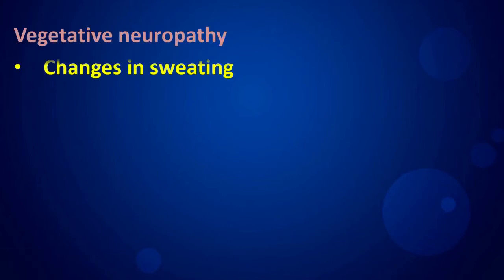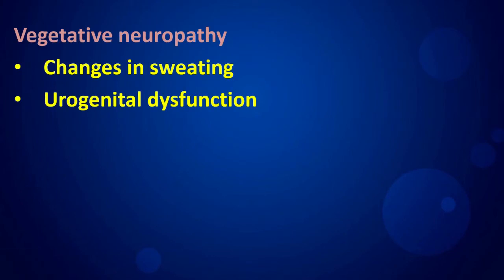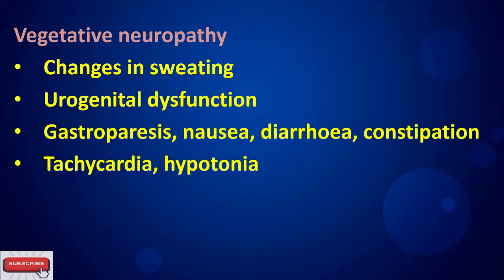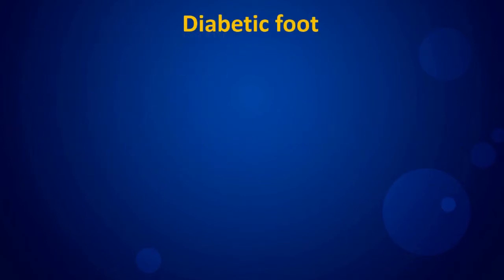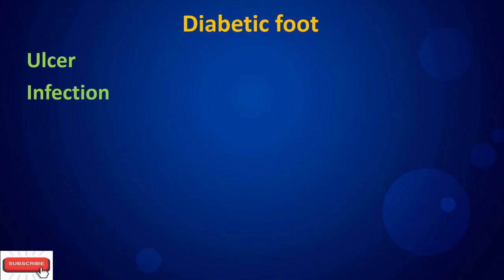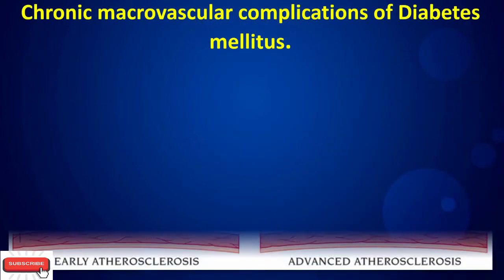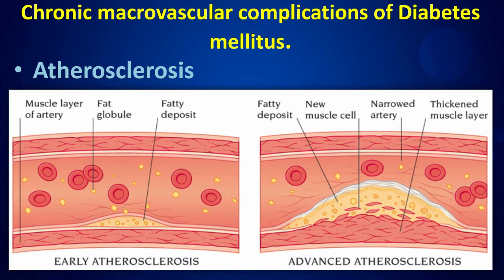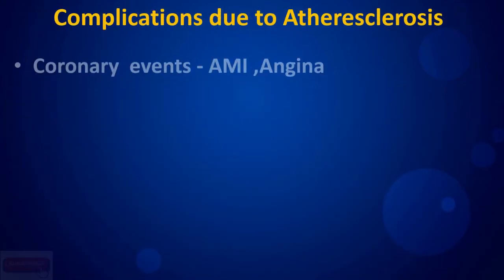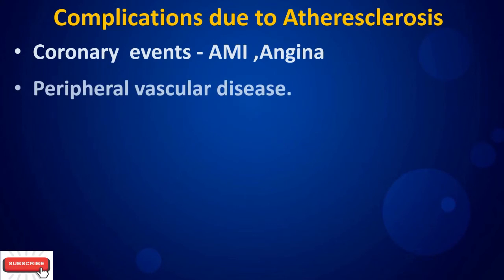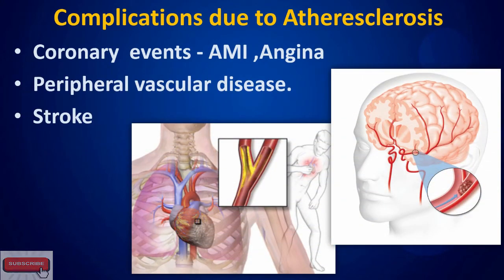Vegetative neuropathy causes changes in sweating, urogenital dysfunction, gastroparesis, nausea, diarrhea, constipation, tachycardia, and orthostatic hypotension. Diabetic foot complications include ulcer, infection, gangrene, and amputation. Chronic macrovascular complications due to atherosclerosis include coronary events, acute myocardial injury, angina, peripheral vascular disease, and stroke.